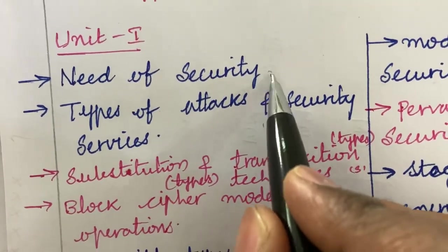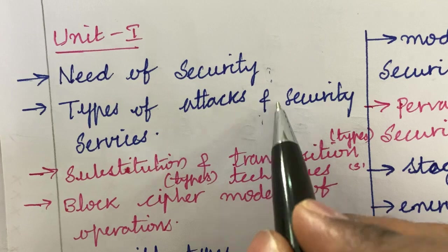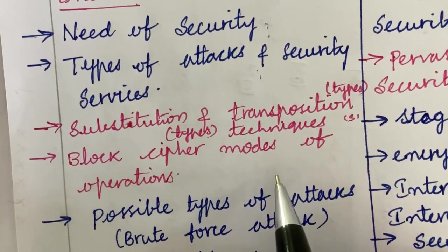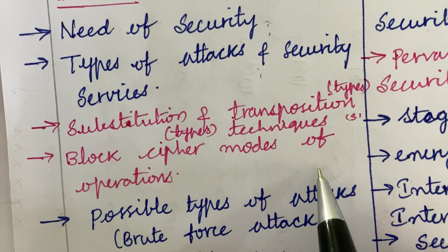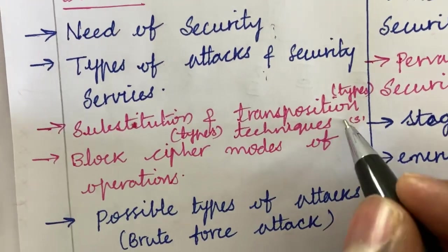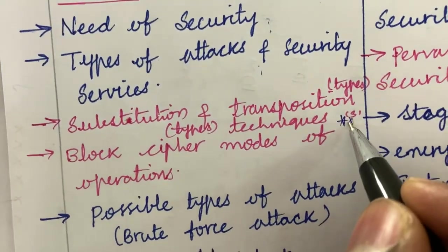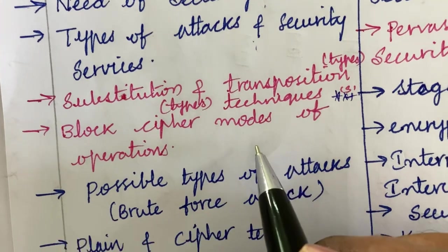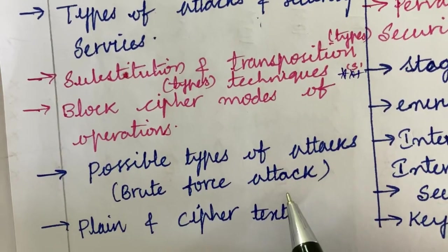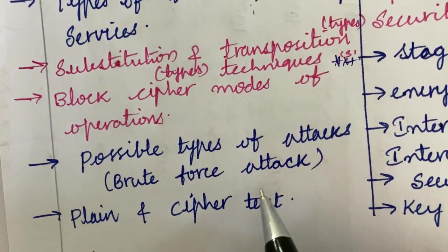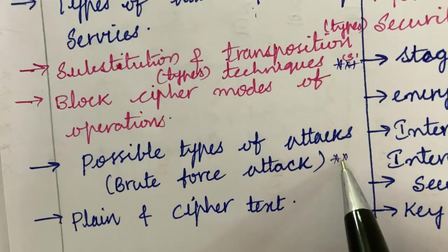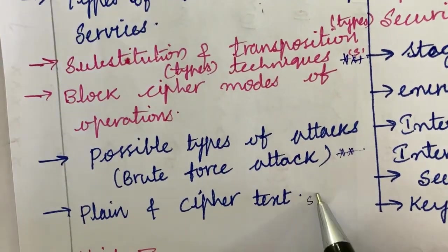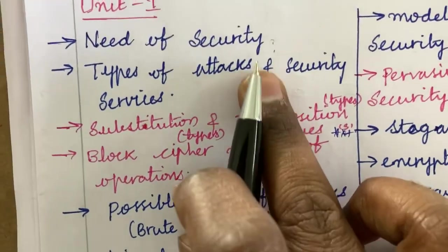This may appear as a short or long question. Substitution and transposition ciphers — their types and techniques — is one of the very important questions. Block cipher modes of operation and possible types of attacks, including brute force attacks, are asked several times. Plain text versus cipher text may also be a short question.